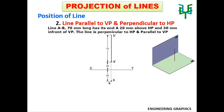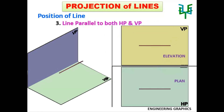In the next case: line parallel to both HP and VP. Since the line is parallel to both planes, both the elevation and plan have true length. The elevation and plan are going to be lines parallel to the XY line.